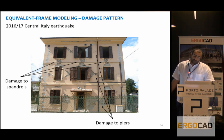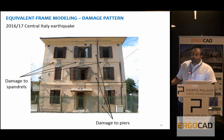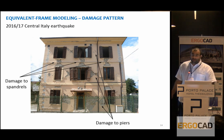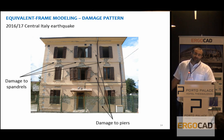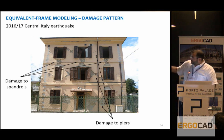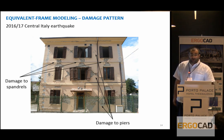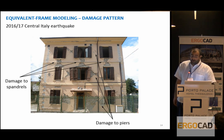The building was demolished afterwards because of the severity of the damage, but it was still standing while most of the city was destroyed. Because of the effectiveness of those retrofits that prevented out-of-plane overturning, we can see here all the types of damage that with our equivalent frame models we can capture quite well.